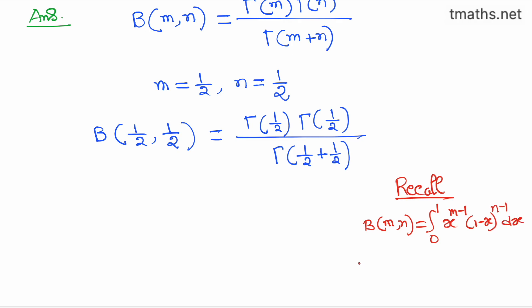which can also be written as 2 times integration from 0 to π/2, sin to the power 2m minus 1 theta, cos to the power 2n minus 1 theta, d theta.